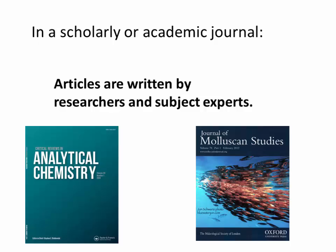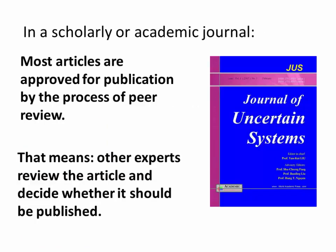Let's talk about scholarly or academic journals. Articles are written by researchers and subject experts. Most articles are approved for publication through the process of peer review, which means other experts review the article and decide whether it should be published.